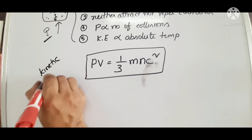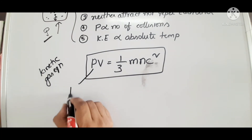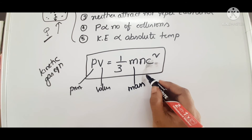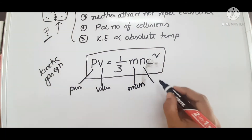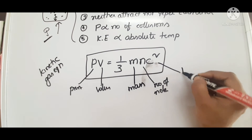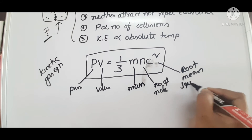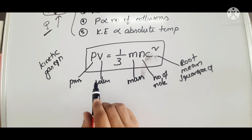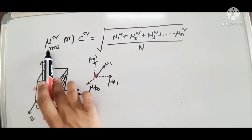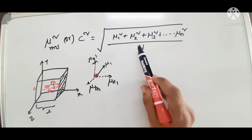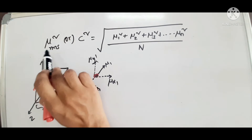In this equation, P is pressure, V is volume, M is mass of the molecule, N is number of molecules, and C is root mean square speed. Mu RMS or C squared — mu RMS is the root mean square speed, obtained by taking the root of the mean of the squared velocities of gas molecules.